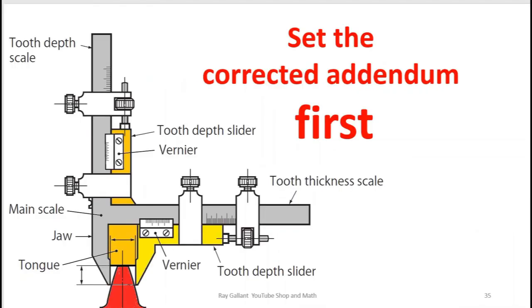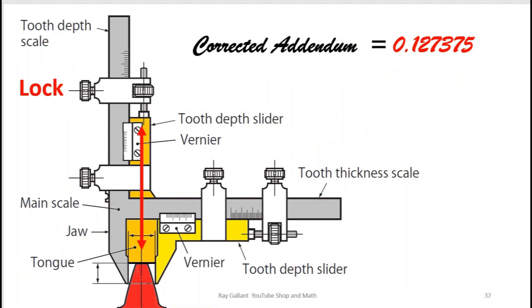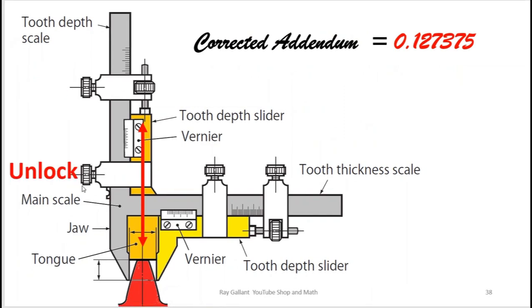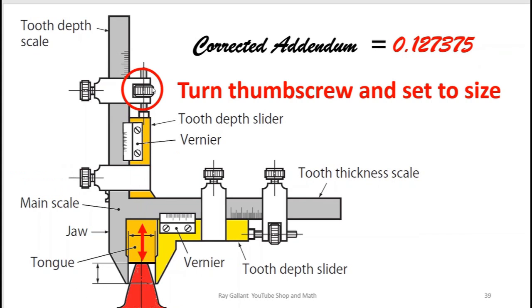Okay so whenever we use our gear tooth vernier we always set the corrected addendum. First we're going to lock the upper arm lock here. Then we're going to unlock our lower arm lock and we're going to turn our thumb screw.